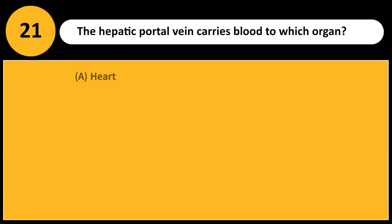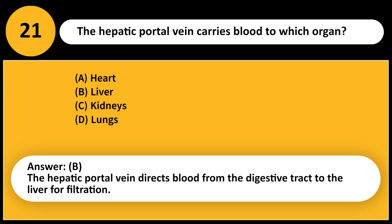The hepatic portal vein carries blood to which organ? A. Heart. B. Liver. C. Kidneys. D. Lungs. Answer: B. The hepatic portal vein directs blood from the digestive tract to the liver for filtration.